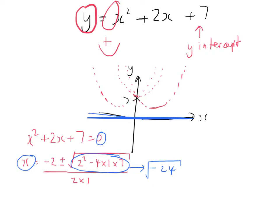This is the situation where completing the square comes in handy, because it gives us a way of rearranging the equation into a format that tells us where the minimum point is — whether it's to the left of the y-axis, on the y-axis, or to the right of the y-axis.